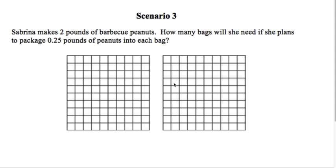We're going to be dividing a whole number by a decimal using the area model or the grid method. So the first thing we need to do is make two grids that are equivalent to the whole number, or two pounds. So we have two wholes represented already.